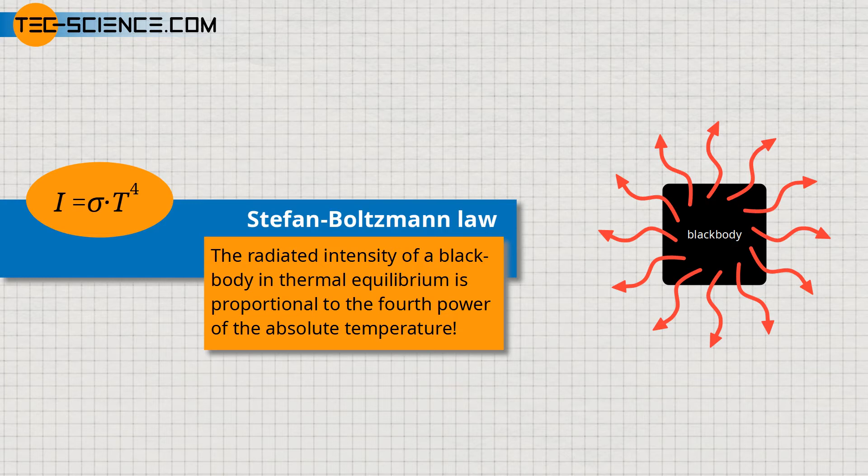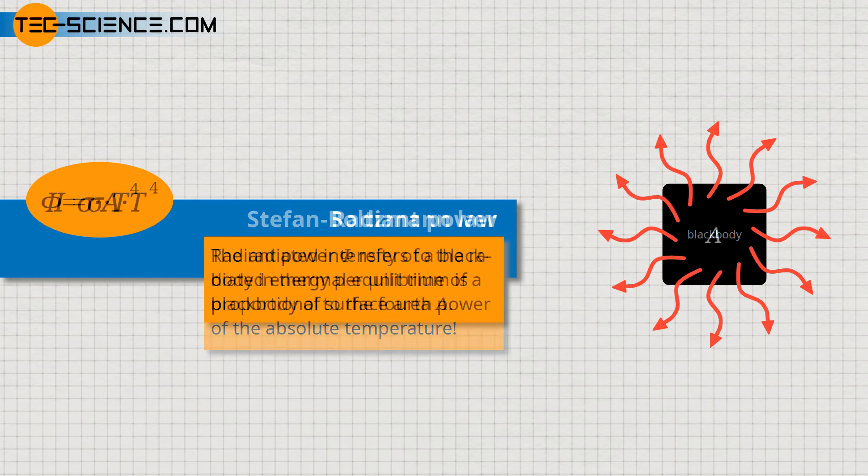The intensity can now be used to determine the radiant power of a blackbody, also called radiant flux — the emitted radiant energy per unit time. For this, the intensity as a surface power density just has to be multiplied by the surface area of the blackbody.